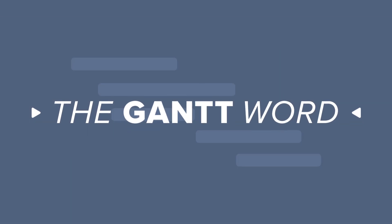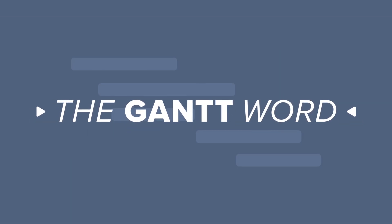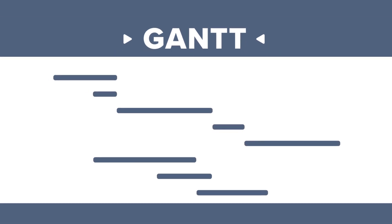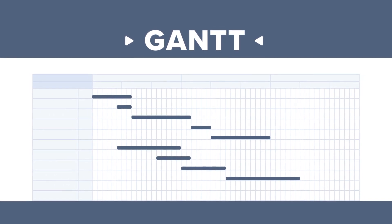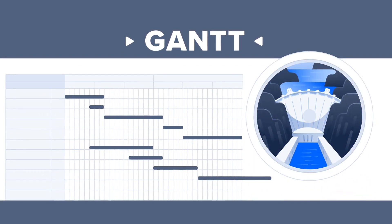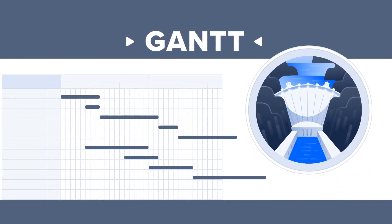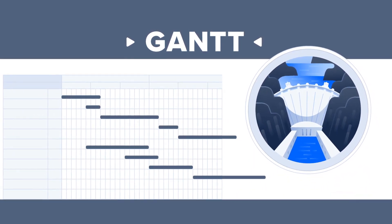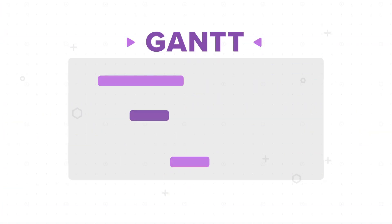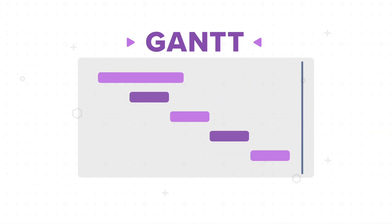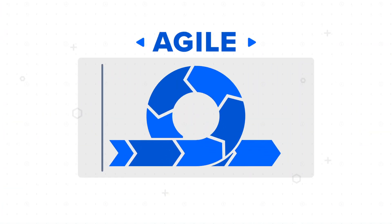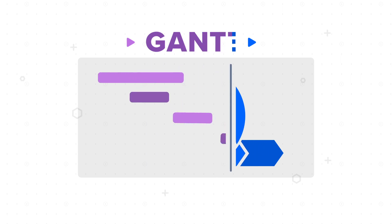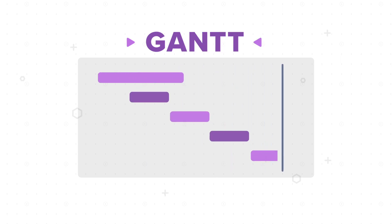They may have even mentioned the Gantt word. It's true, Gantt charts are old. They were conceived in the early 1900s and were used for large construction projects like the Hoover Dam. Everyone, except company management, knows Gantt charts are incompatible with agile project management practices.